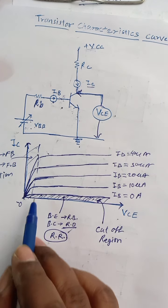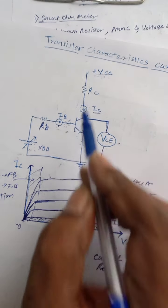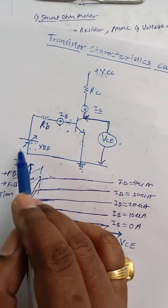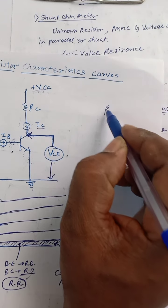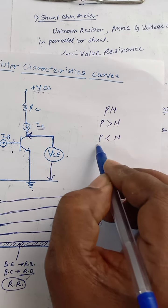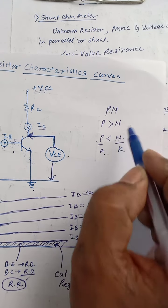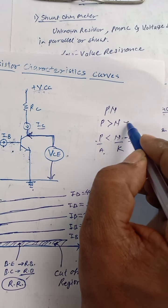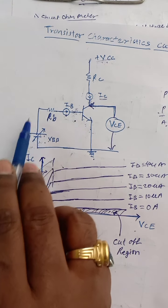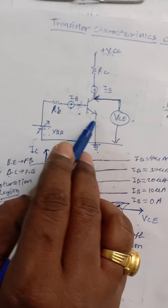If we increase the VCC, the base-to-collector junction gets reverse biased because N is at higher potential and P is at lower potential. We know that a PN junction gets forward biased when P voltage is greater than N voltage — P type is anode and N type is cathode. If P voltage is less than N voltage then it gets reverse biased. So with high VCC, N is at higher potential and P at lower potential, so the base-to-collector junction becomes reverse biased, and the base-to-emitter junction becomes forward biased because of positive potential on the base.